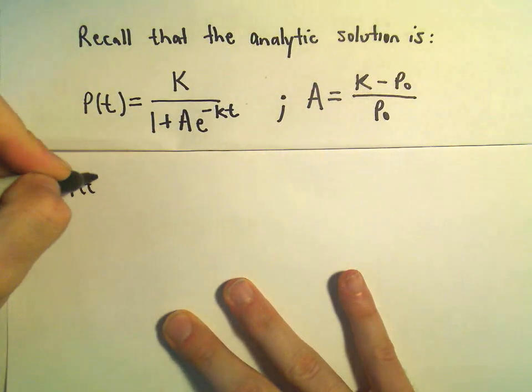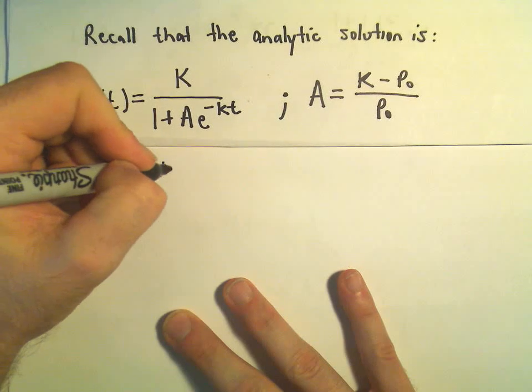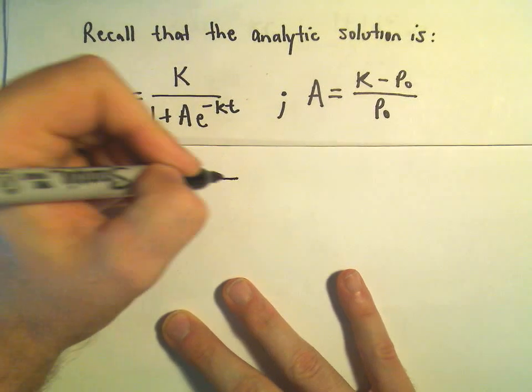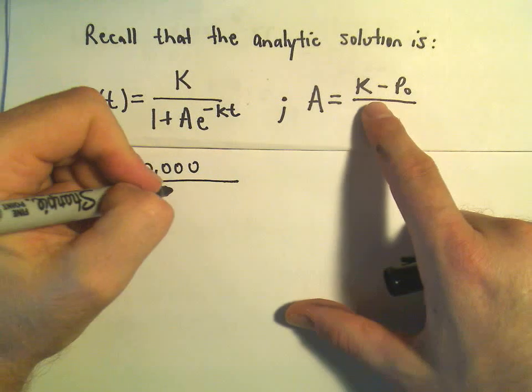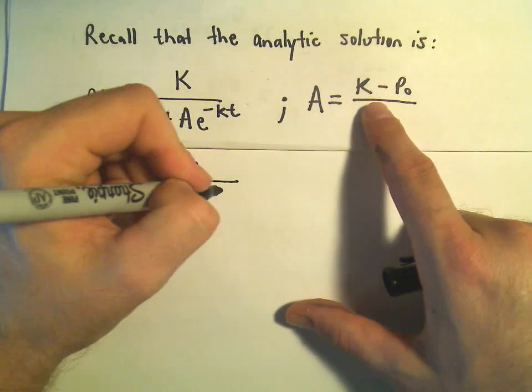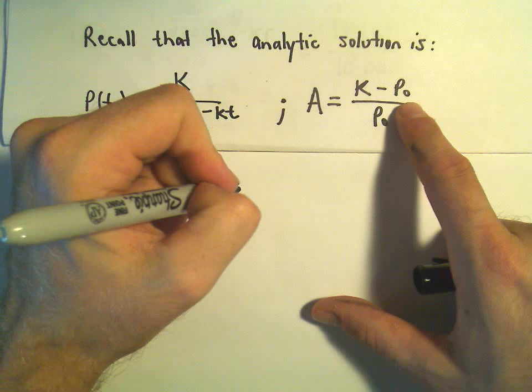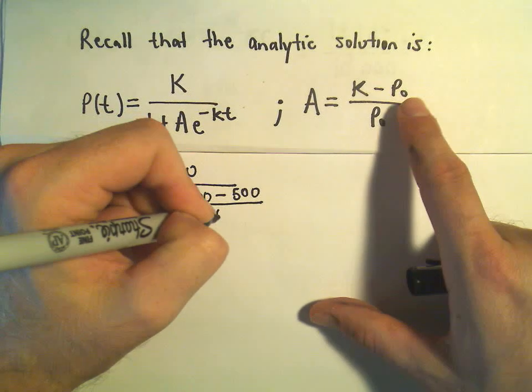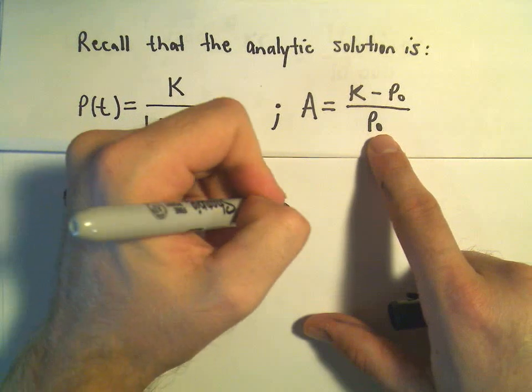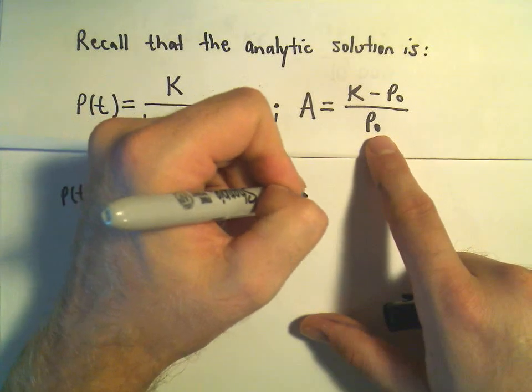So, the population at time t, we said our carrying capacity was 10,000. And then we have 1 plus our A value, but again A, we take our carrying capacity, which is 10,000, we subtract away the initial population, we divide that by the initial population, and then we take our little e to the negative k times t.